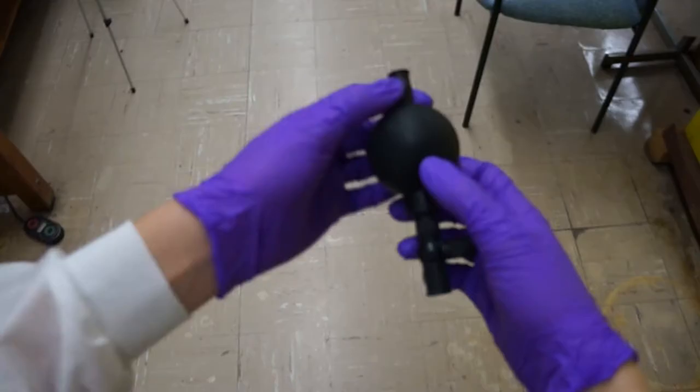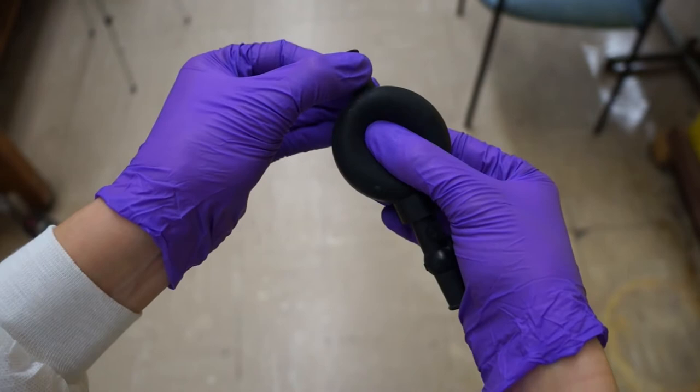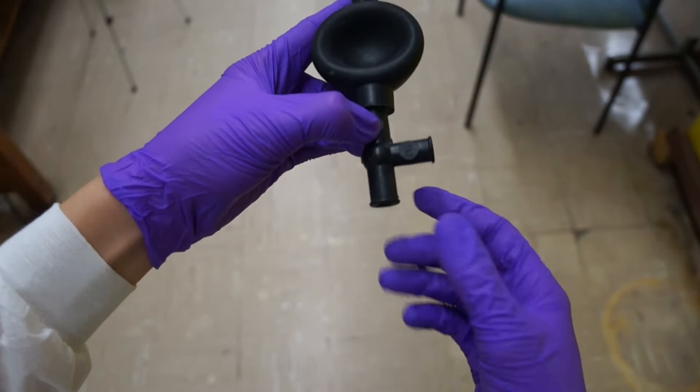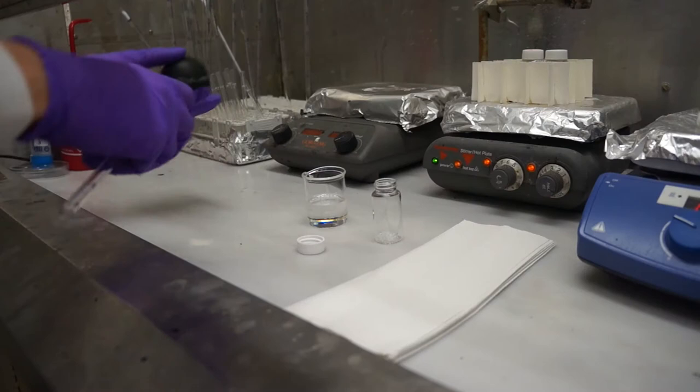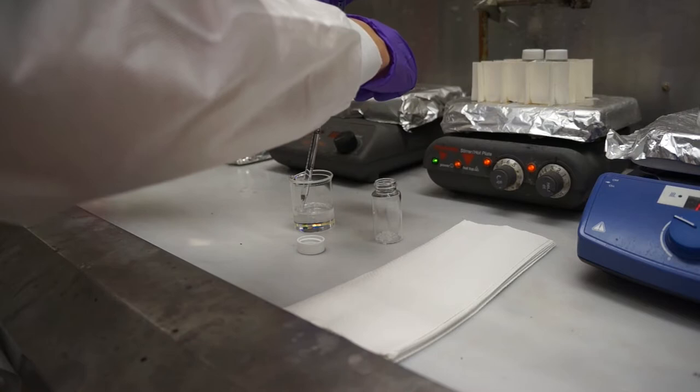To pipette our toluene into our scintillation vial, we're going to need to know how to use this bulb. You need to create negative pressure so that you can have suction. You can press down on the bulb while squeezing the A for this. Then you can draw up liquid by squeezing on the S, and you can evacuate the liquid by squeezing on the E. Now you can use your glass pipette to transfer 20 milliliters of toluene from your beaker to your scintillation vial. Make sure to take note of the markings on the pipette.